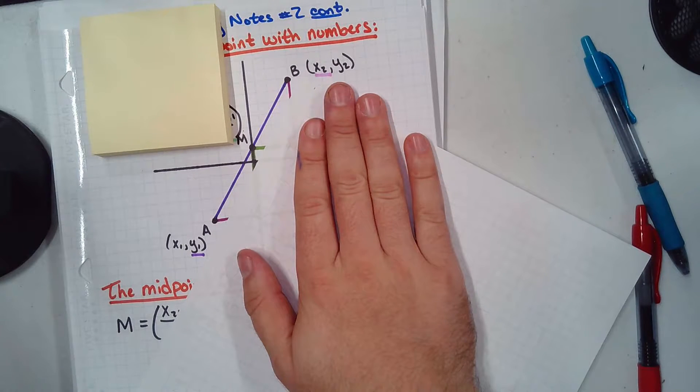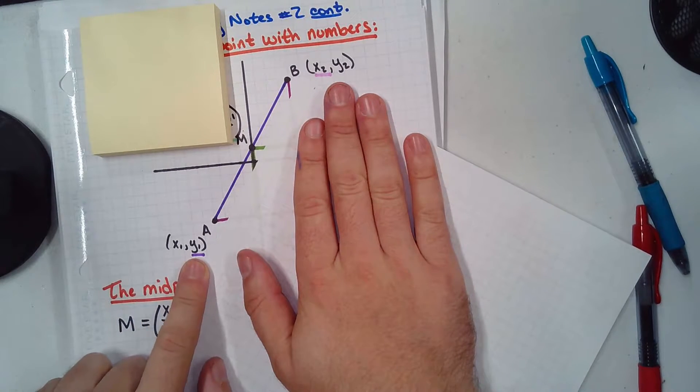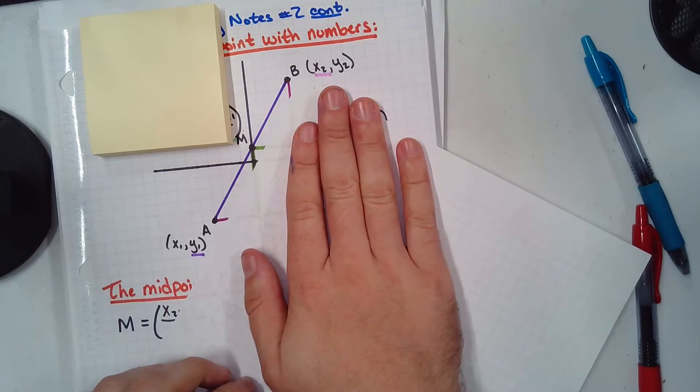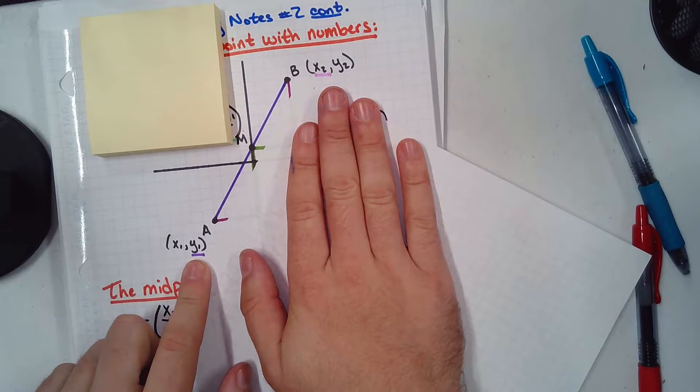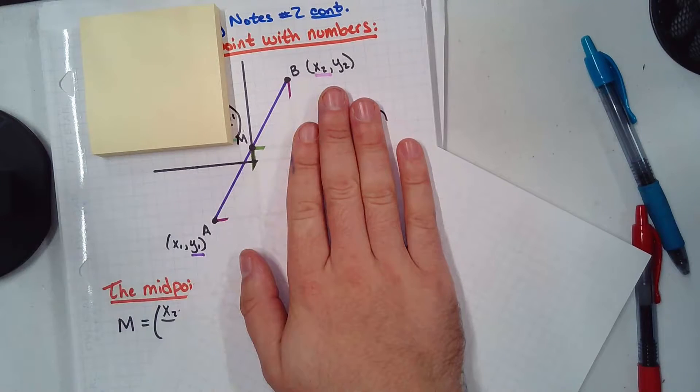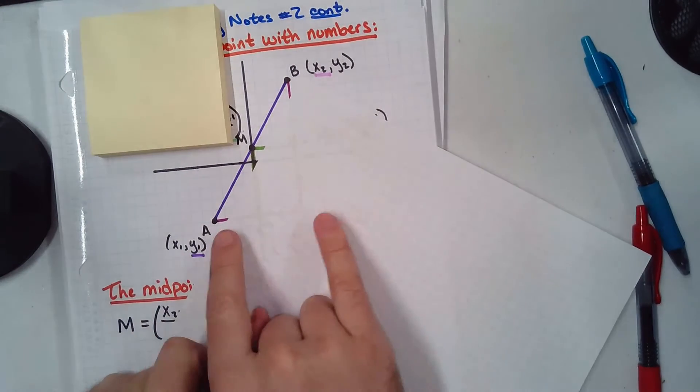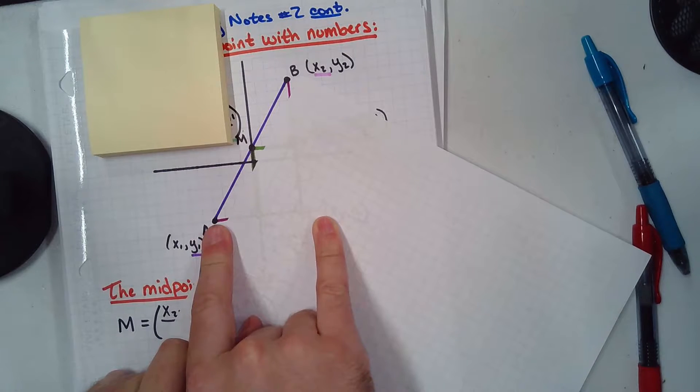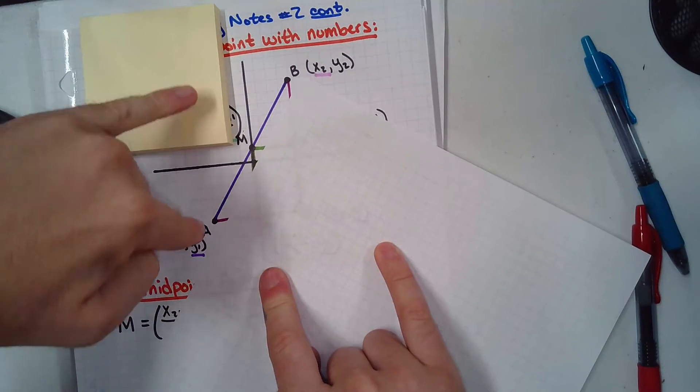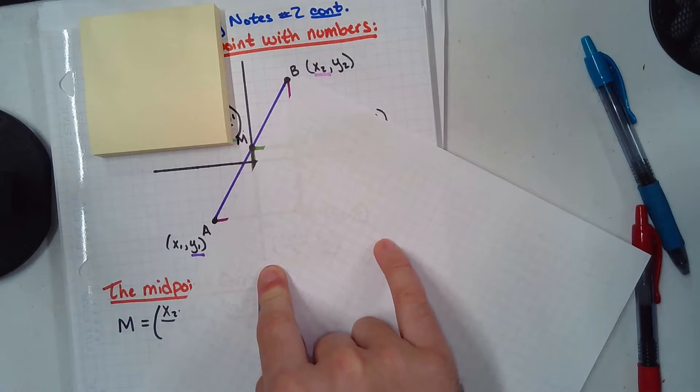Now, notice also I labeled A and B with coordinates. Algebraic coordinates, not numerical. So, X1, Y1, I called A. B, I called X2, Y2. Now, why are they both different? Why do I have no crossover here? Why don't they have an X1 here and an X1 there? They're completely different, right? Horizontally, they have distance between them, right? So, they're not the same horizontally. Are they the same vertically? No, right? They're completely different. So, of course, they're X1, Y1, X2, Y2.